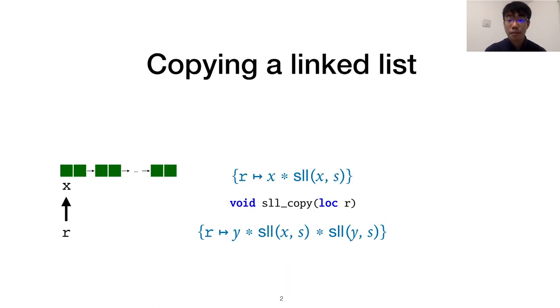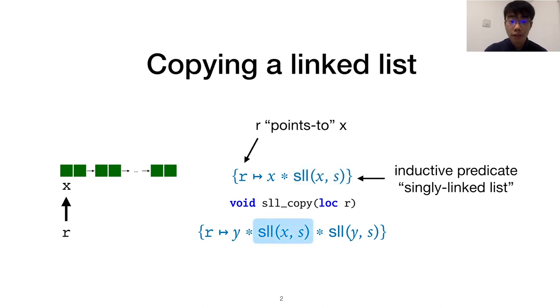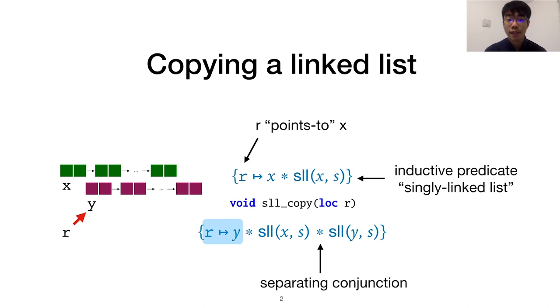Imagine you're a developer and you need to implement a specification of a program that creates a copy of a linked list expressed in separation logic. The precondition is a reference pointing to the head of a singly-linked list whose presence is expressed with this inductive predicate. In the postcondition, eventually we want the original list plus a copy with identical elements and an updated reference pointing to the head of the new copy. This connective is called a separating conjunction which says that the left spatial part is disjoint from the right.